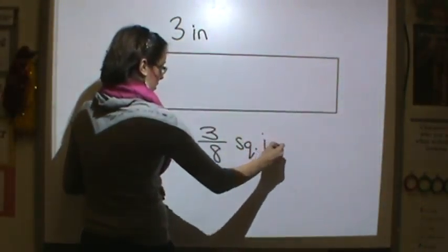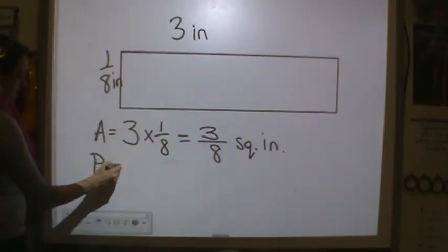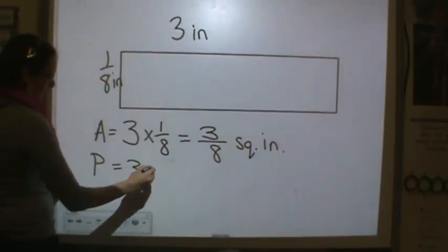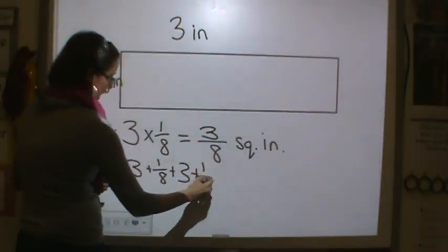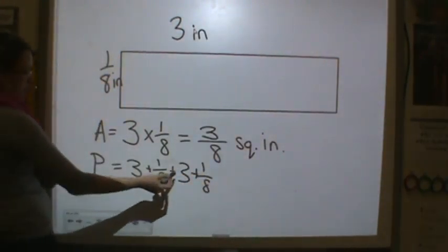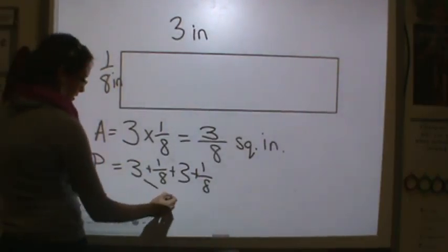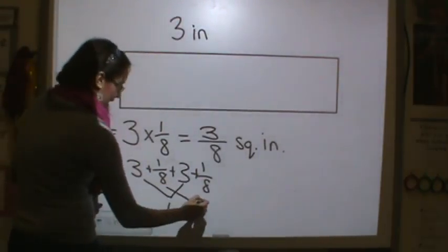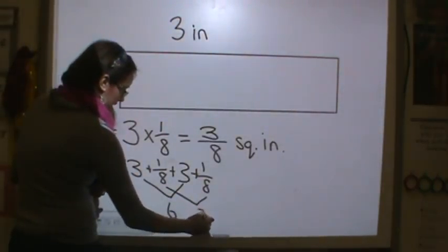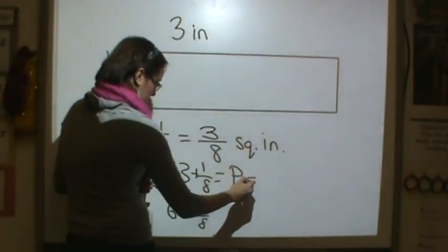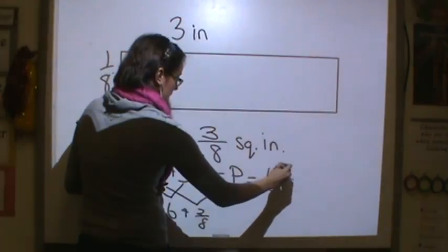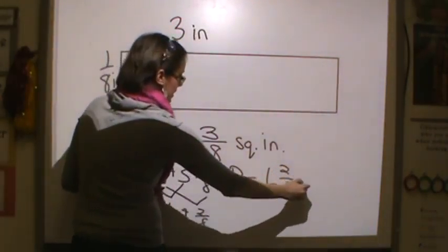All right, perimeter is equal to length plus width plus length plus width. That is equal to 3 plus 1/8 plus 3 plus 1/8. All right, 3 plus 3 is 6. 1/8 plus 1/8 is 2/8. So if I put those together, my perimeter would be 6 and 2/8 of an inch.